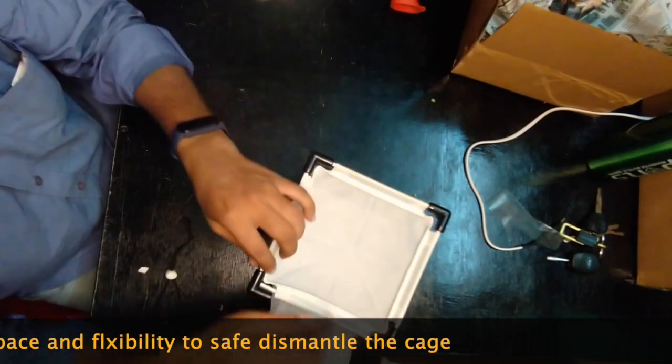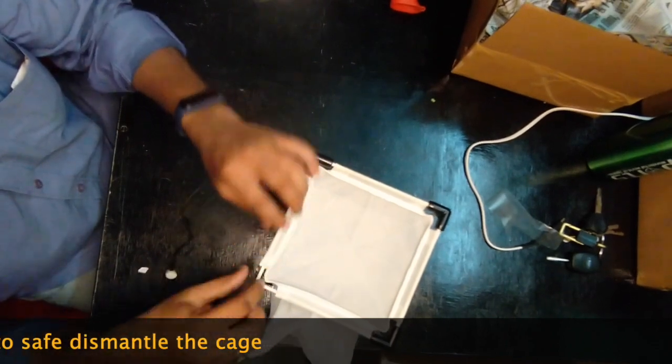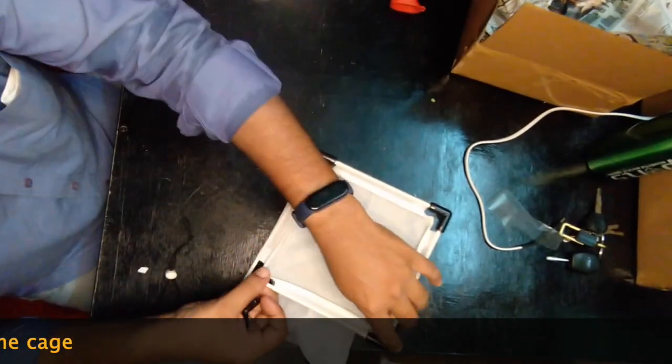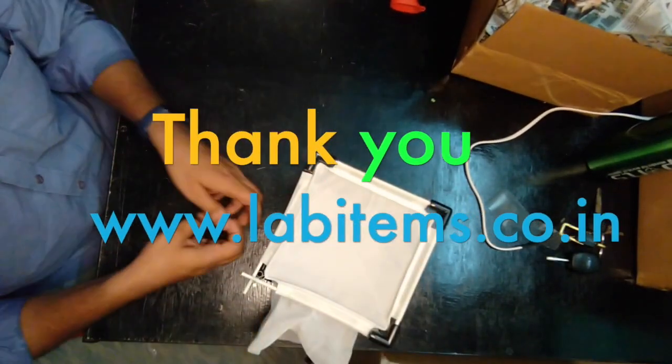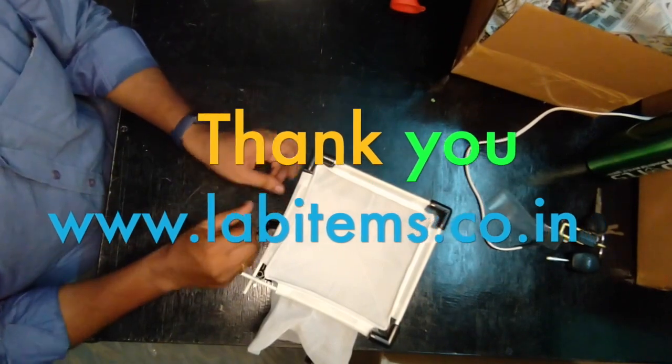If it is not coming, again try the other side. If you cannot pull it, do not force dismantle the cage. If this is the difficult place, just leave that and try to dismantle other things. This way you can dismantle the cage.